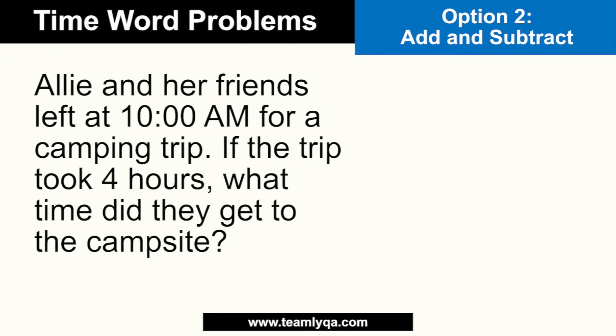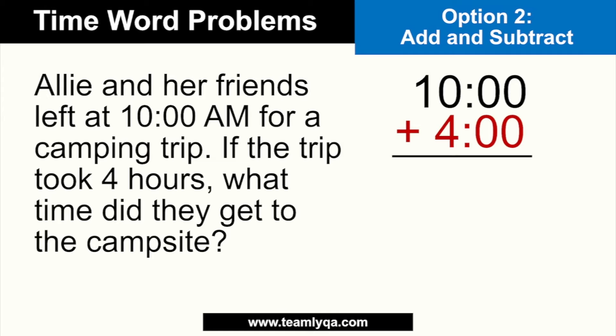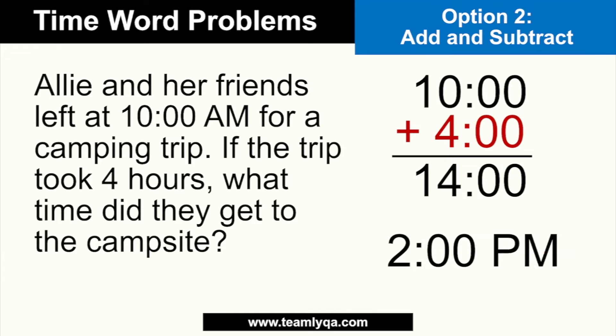So the other option is to add and subtract using military time — just add straightforwardly after converting to military time. For example: Ali and her friends left at 10 a.m. for a camping trip. Start at 10 o'clock AM, and just add the 4 hours — giving you 1400. We know 1400 in military time is 2 PM. So all I did was add and then convert, then label it.